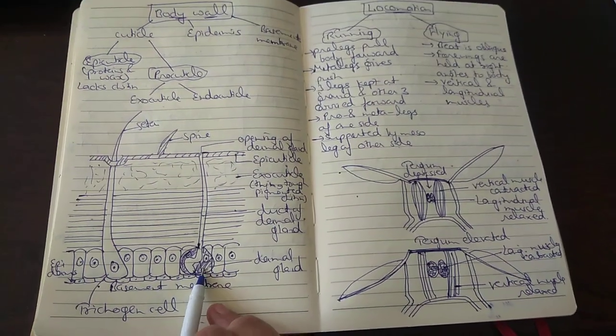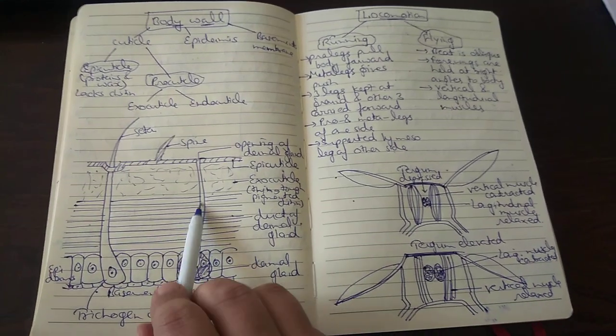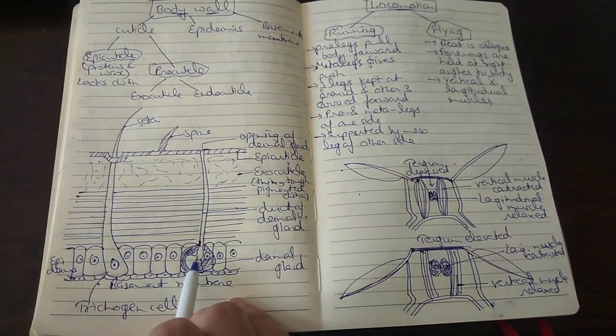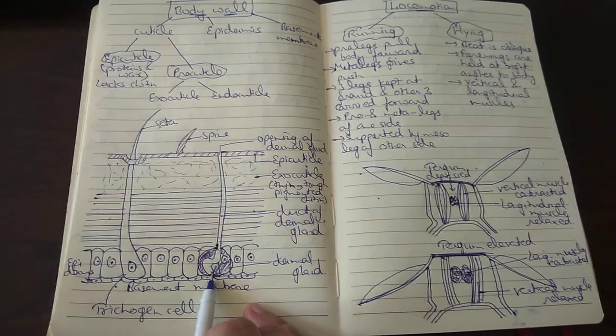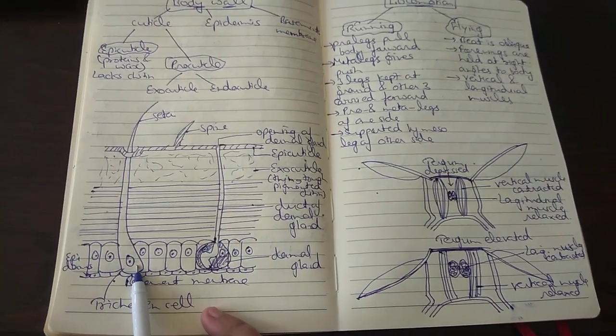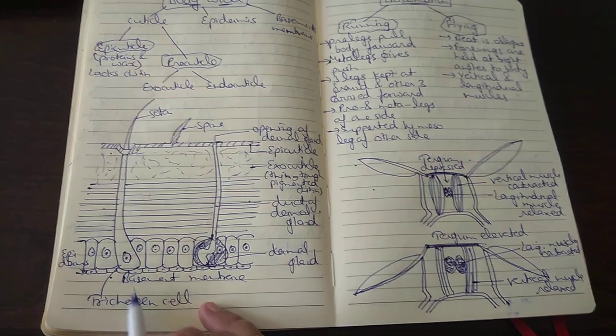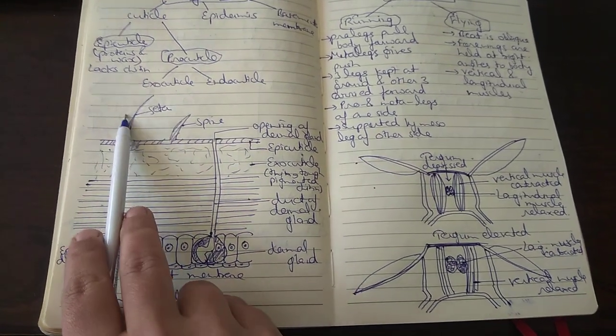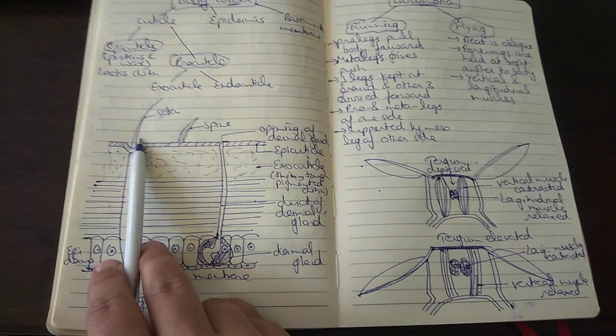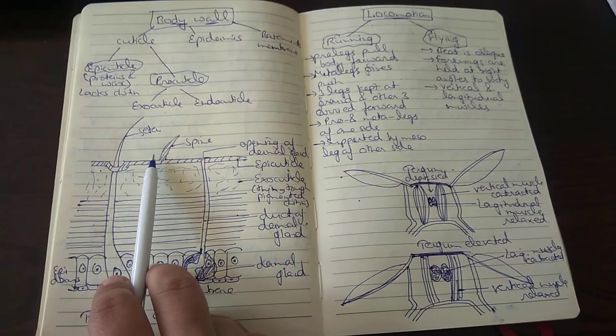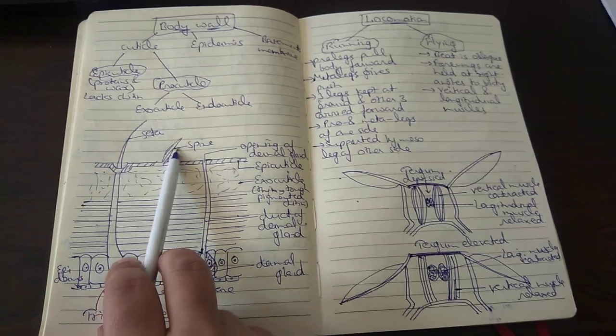The epidermis is a single layered cell formed of columnar cells. It has dermal glands which secrete the overlying cuticle and therefore is also referred to as chitinous membrane. This epidermis also has extensions called trichogen cells which result in the formation of setae.